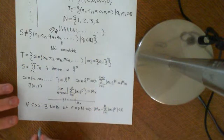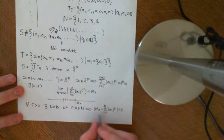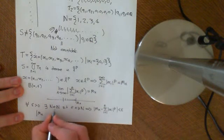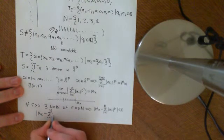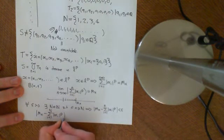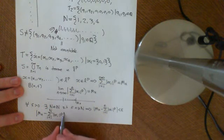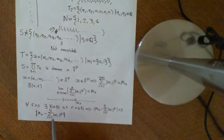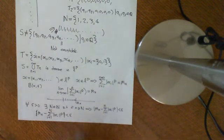So: there exists some big N in the natural numbers such that MX minus the sum from i equals 1 to N of |Xi|^P is less than epsilon. Because it's a monotonically increasing sequence we can drop the modulus, since MX is always greater than any partial sum. So I can make this difference as small as I like by finding an appropriate big N.